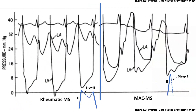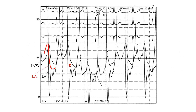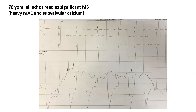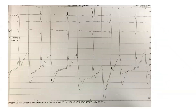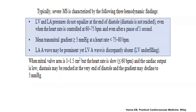In questionable cases, do simultaneous LA and LV recording — don't rely on wedge pressure. Understand the extreme dependence of mitral gradient on flow conditions and heart rate, particularly on echo. In those cases, catheterization using transseptal LA measurement is needed to measure the true mitral valve area and assess for the hemodynamic features: lack of diastasis and discrepancy between LV and LA A-wave.